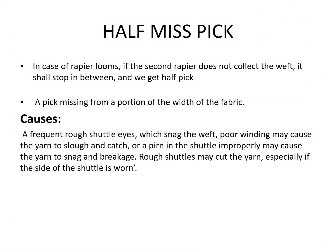The third defect is half misspick. As the name suggests, in half of the area the pick will be missed. In the case of rapier looms, if the second rapier does not collect the weft, it shall stop in between and we get a half pick — a pick missing from a portion of the width of the fabric. The causes include frequent rough shuttle eyes which snag the weft, poor winding which may cause the yarn to slough and catch, a burn in the shuttle which may cause the yarn to snag and break, and rough shuttles which may cut the yarns especially if the side of the shuttle is worn.